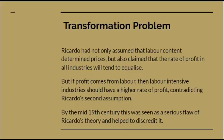Ricardo did some calculations to the effect that he expected prices to be something like 93% determined by labour content, and that the effect of profit equalisation would be, at most, to introduce a 7% error. The empirical data actually shows that the labour theory of value gives somewhat better accuracy than Ricardo had anticipated. But in the 19th century, before any empirical data had been collected, this was seen as a serious flaw of Ricardo's theory and helped to discredit it.